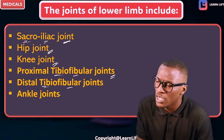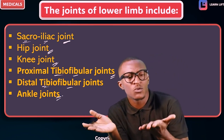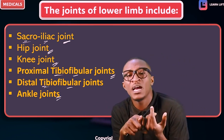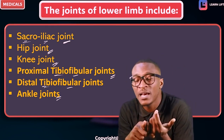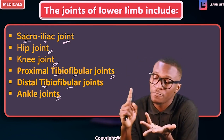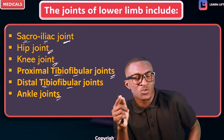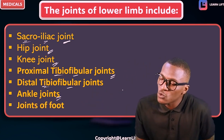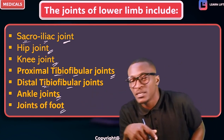We also have what we call the ankle joint. The ankle joint is formed by the malleoli of your tibia, as well as your fibula, as well as your talus bone. And we have what we call the joints of the foot.